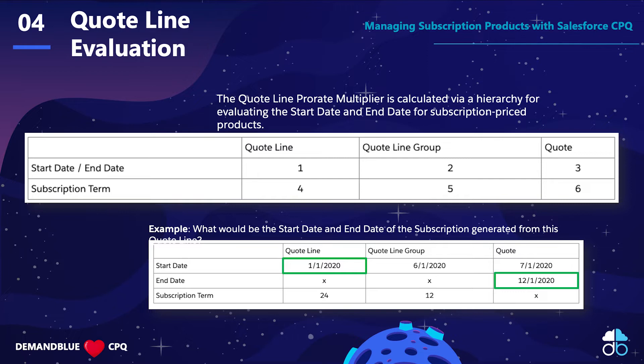We're going to be looking at start date, end date, and subscription term. You can see here in the slide that we're going to start at quote line and move across the quote line group, with quote start date and end date being considered first — positions one through five — and subscription term being considered last at position six.